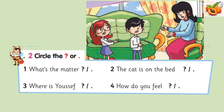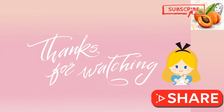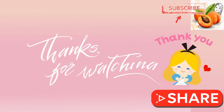Circle a question mark or full stop. 1. What's the matter? 2. The cat is on the bed. 3. Where is Yusuf? 4. How do you feel? Now read and complete with CK or SK. 1. Sick. 2. Skin. 3. Skirt. 4. Black. 5. Sky. Thanks for watching. And now we say goodbye.